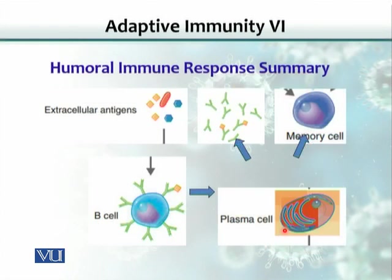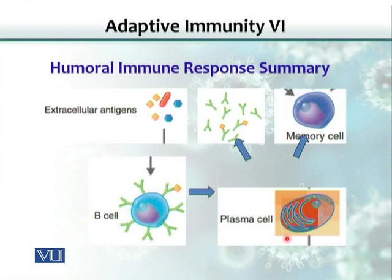This is a summary of the humoral immune response. The antigen has antigenic epitopes, and one epitope selects a lymphocyte with its specific receptor, which is ultimately transformed into a clone. With the help of T helper cells, it starts making antibodies. Some of these cells become memory cells and some start making antibodies.